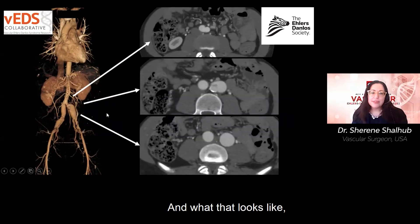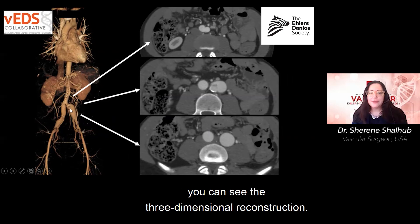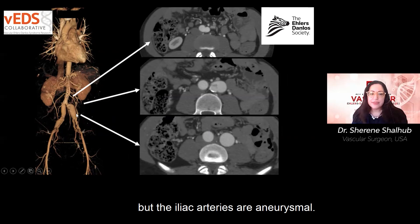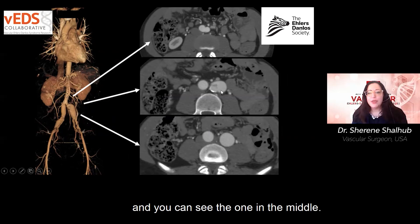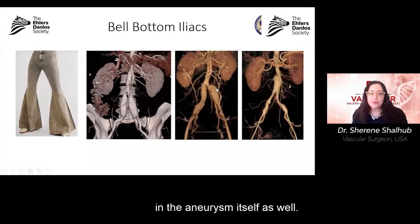Here is an example — you can see the three-dimensional reconstruction where the aorta is not aneurysmal, but the iliac arteries are aneurysmal. You can see the cross-section images and in the middle one, a small dissection flap within the aneurysm itself.